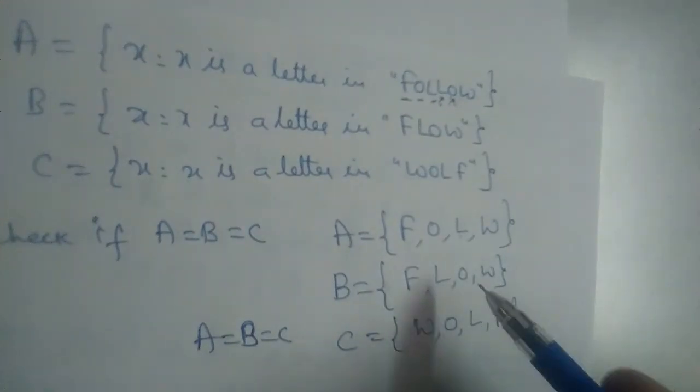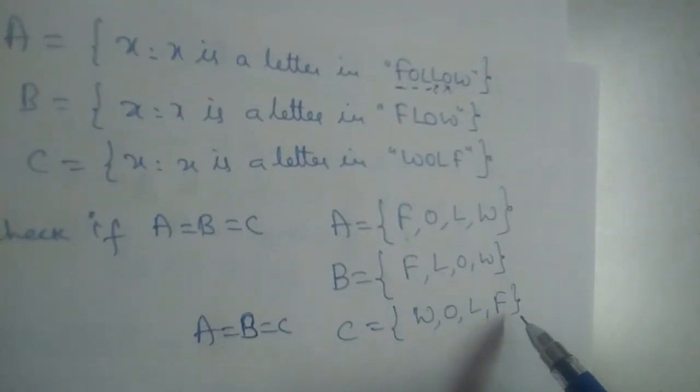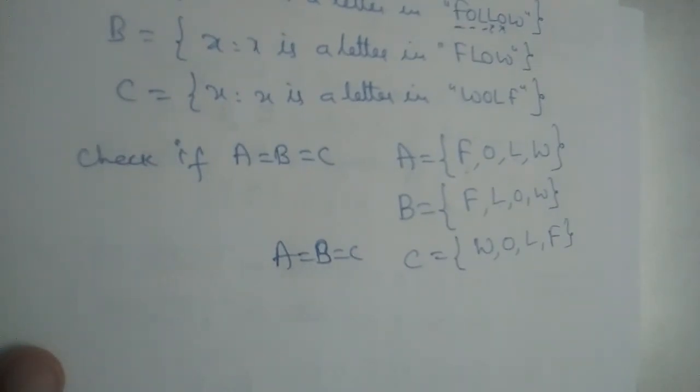Order does not matter, isn't it? Order of the elements does not matter. So A is equal to B is equal to C. Here we go.